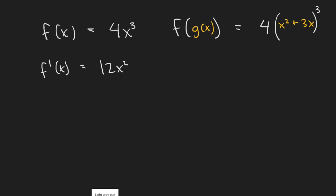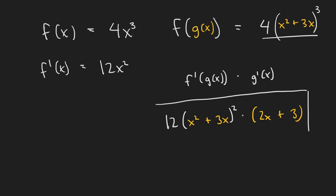From the chain rule, we learned that the derivative would just be the derivative of the outside function times the derivative of the inside function. To be specific, this would be f prime of g of x times g prime of x. So if we wrote that out using this function, that would be 12 times x squared plus 3x squared times the derivative of the inner function, which would just be 2x plus 3. And then what we're left with is the derivative of our composite function.